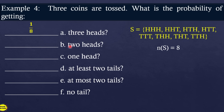What is the probability of getting exactly 2 heads? Counting the outcomes with 2 heads in the sample space: there are 3 such outcomes. Therefore, probability = 3 over 8.